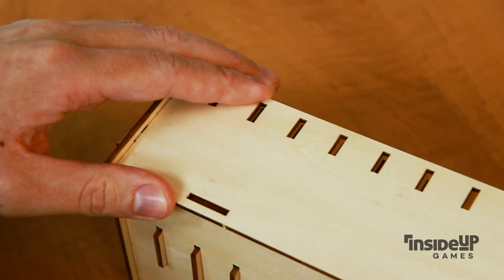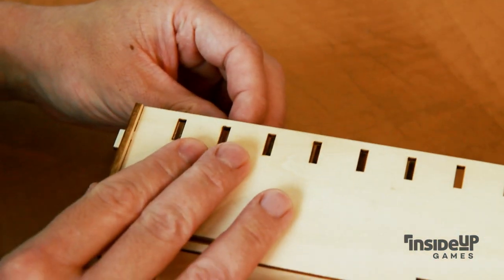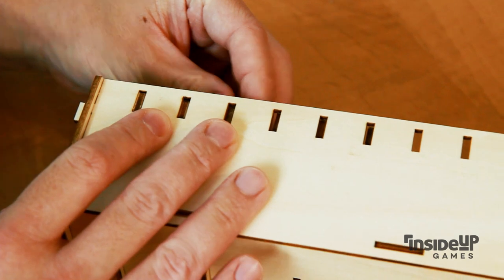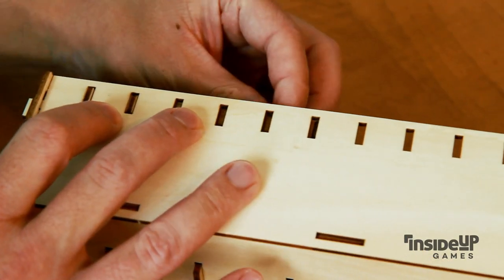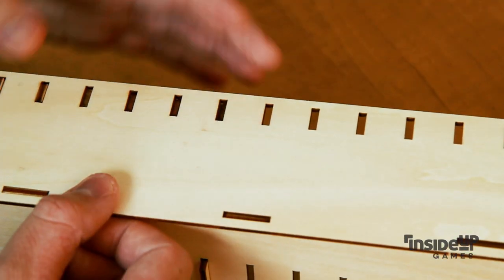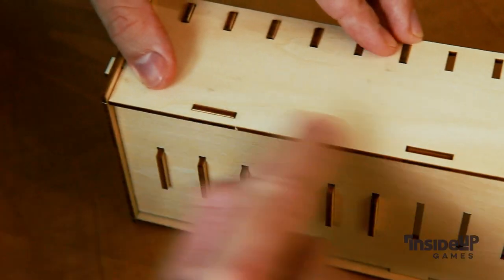Next, line up the holes along the edge with the tabs from the dividers inside. Make sure the larger tabs at the bottom of the tray have also been aligned.